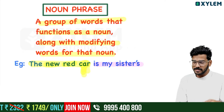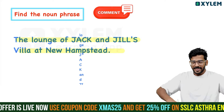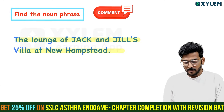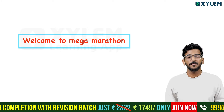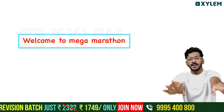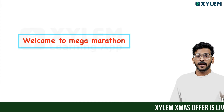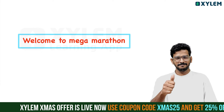I will give you a noun phrase to identify: 'The launch of Jack and Jill's villa at New Hampstead.' What is it? Where is it? Write your answer in the comment box. We will start a mega marathon soon, so don't miss it. We will discuss it in the morning post. See you later. All the best. Powerful!